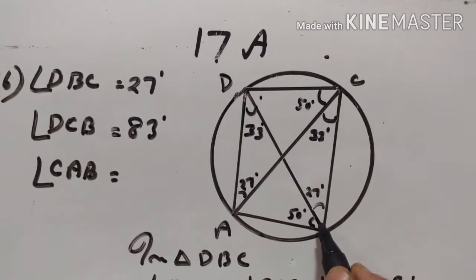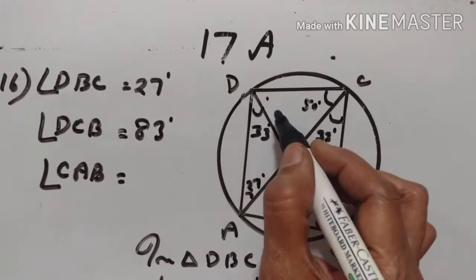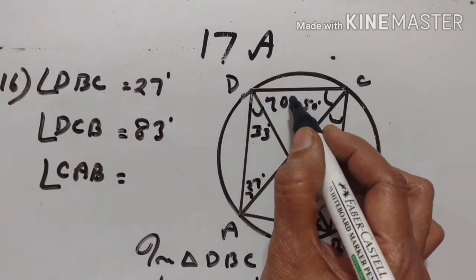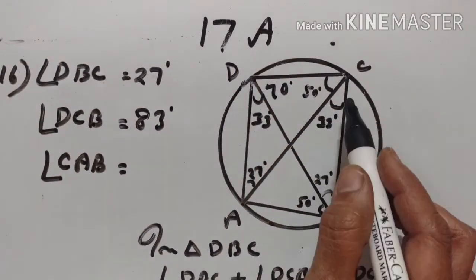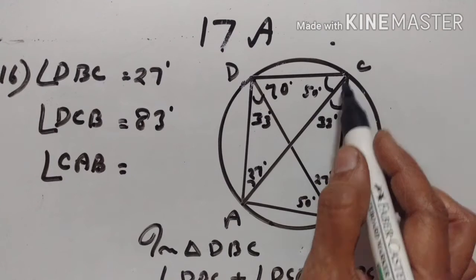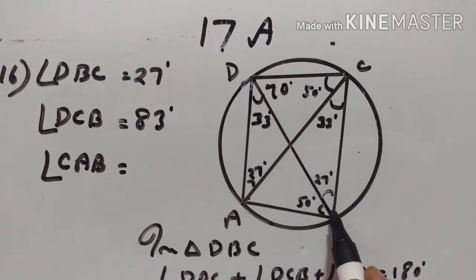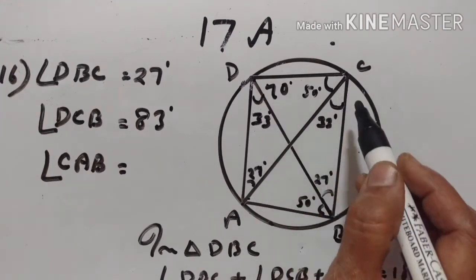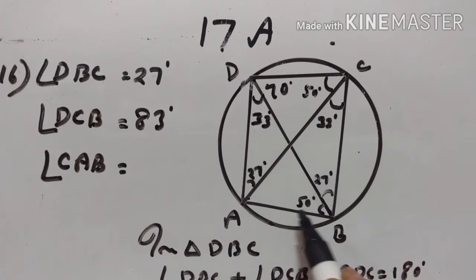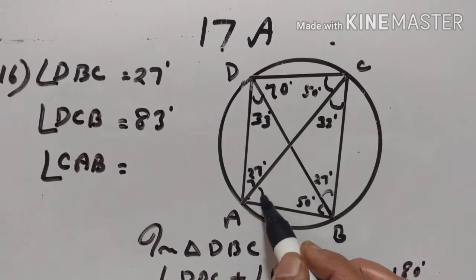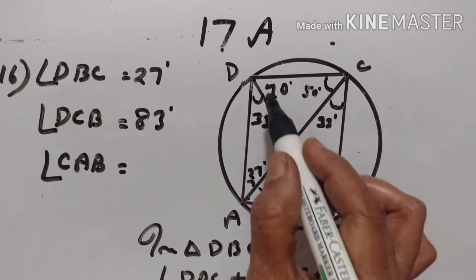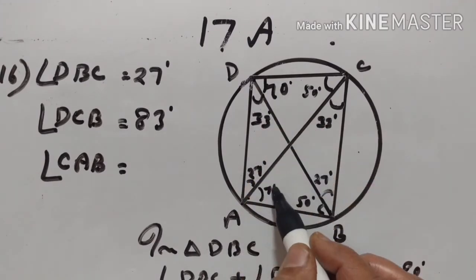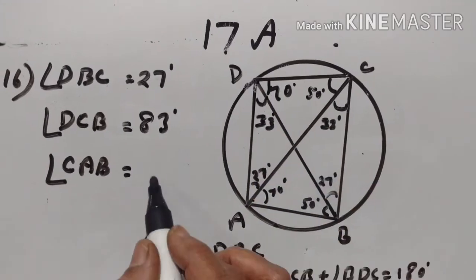Angle BDC is equal to 70 degrees. We want angle CAB. Angle BDC and angle CAB are equal — angles in the same segment. Therefore, angle CAB is also 70 degrees.